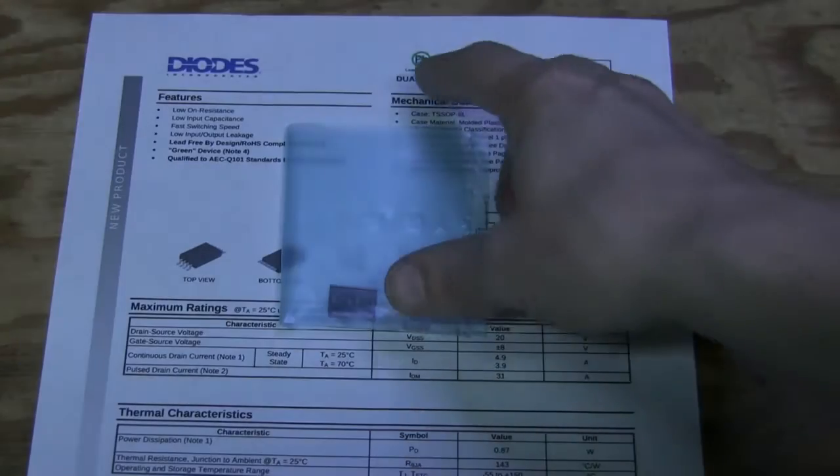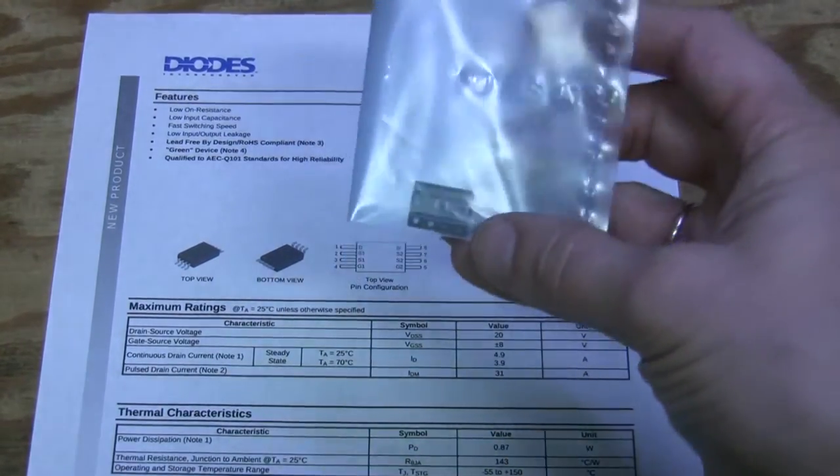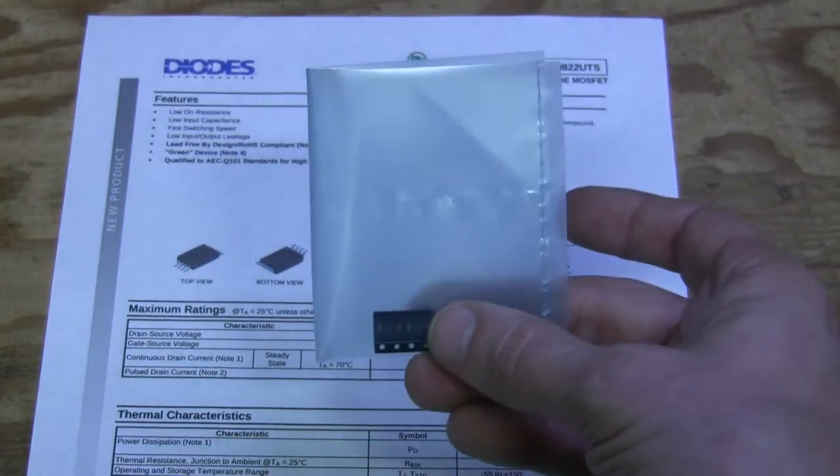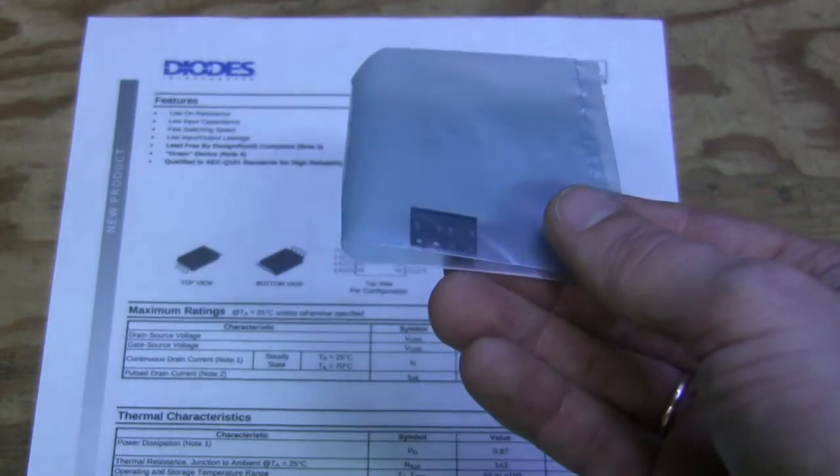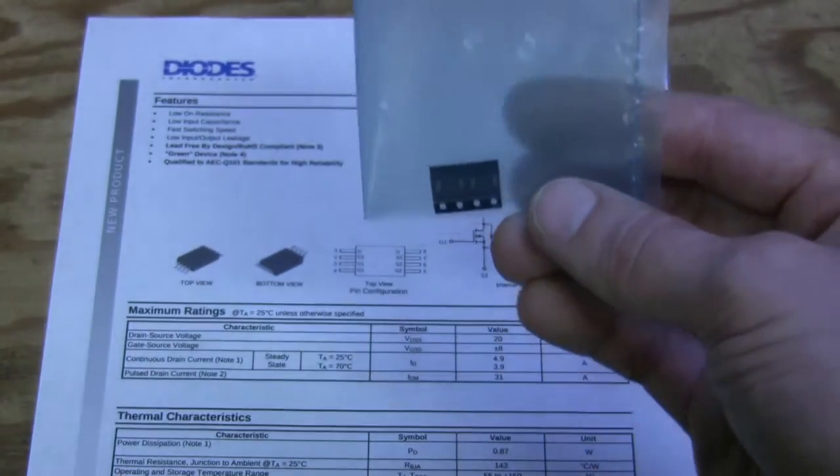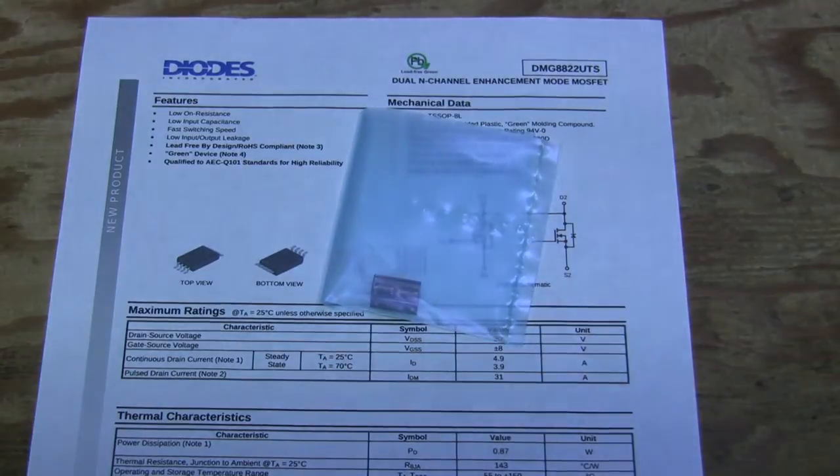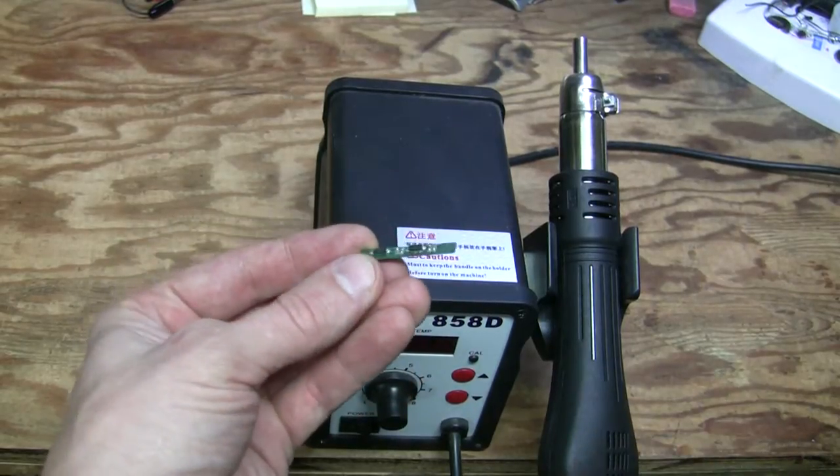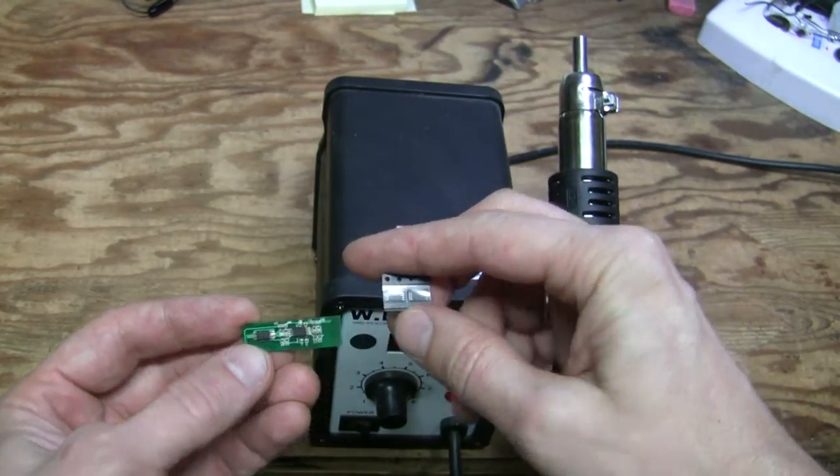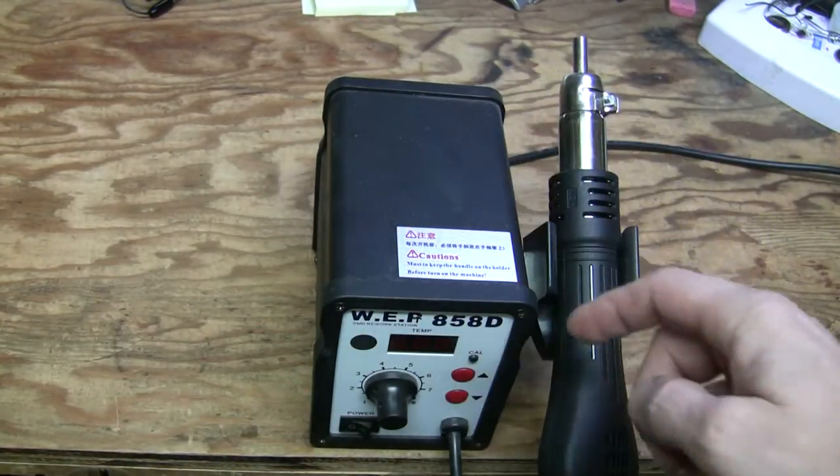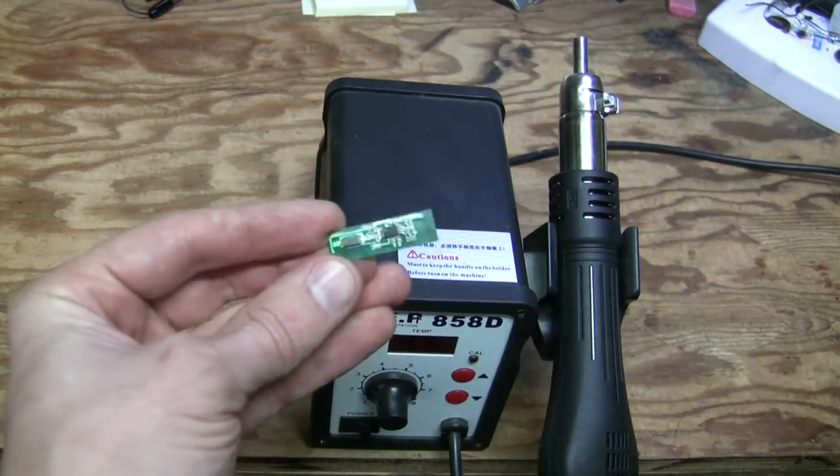Some time later, have a look at this. I ordered a couple of these DMG8822 chips from Digikey, 54 cents a piece. Let's try to fix our battery. Here is our board and a couple of replacement chips. We are going to use this hot air station to remove the damaged chip.